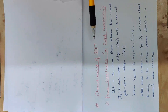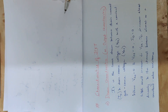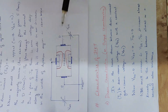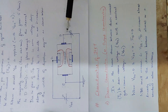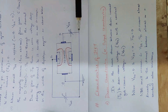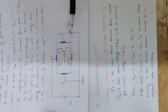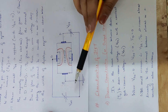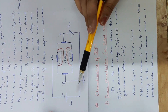Next we will be saying the characteristics of JFET. We are learning the working of JFET. We are using the biasing. We are connected to the drain and the battery, and the gate and the battery.